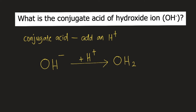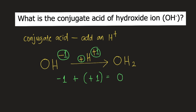But this is not yet the answer. We need to determine the charge of OH₂. The charge of OH⁻ is, of course, negative 1. So, negative 1 plus the charge of H⁺, which is positive 1. Negative 1 plus positive 1 equals 0. So the charge of OH₂ is 0.